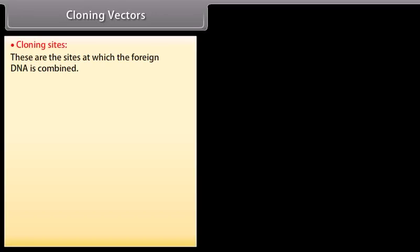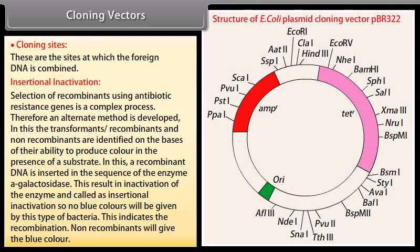Cloning vectors are the sites at which the foreign DNA is combined. Insertional inactivation: selection of recombinants using antibiotic resistance genes is a complex process; therefore, an alternate method is developed. In this method, transformants — recombinants and non-recombinants — are identified on the basis of their ability to produce color in the presence of a substrate. A recombinant DNA is inserted in the sequence of the enzyme beta-galactosidase, resulting in inactivation of the enzyme — called insertional inactivation — so no blue color will be produced by this type of bacteria, indicating recombination.